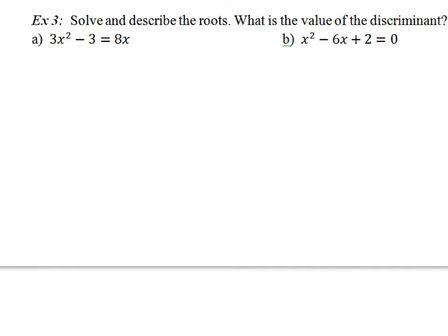For example 3, let's examine some more possibilities for discriminants. So far: our first example had a negative discriminant, which told us roots would be complex. Example 2a had a positive perfect square discriminant, giving real, rational, and unequal roots — two distinct roots. Example 2b had a discriminant equal to zero, giving one real rational root. Now let's go on to number 3a, putting it in standard form: 3x squared minus 8x minus 3 equals 0.